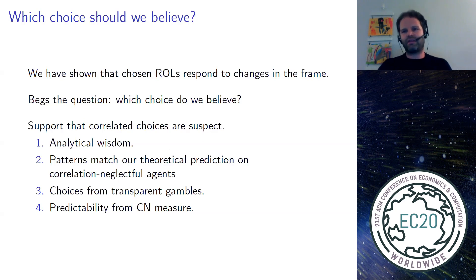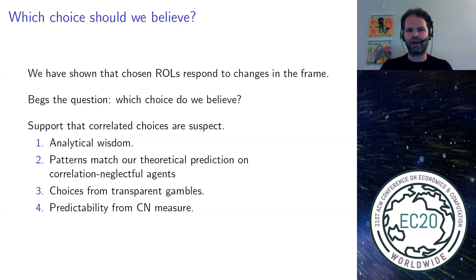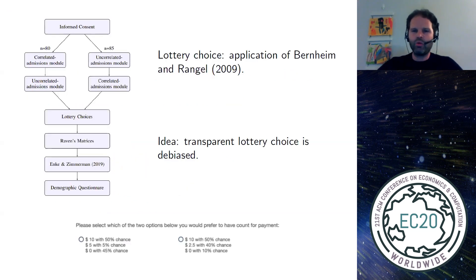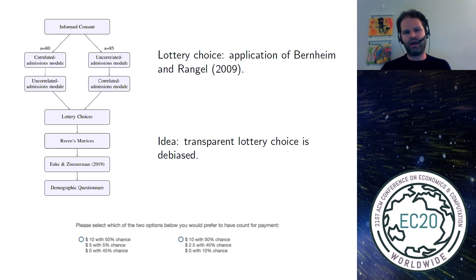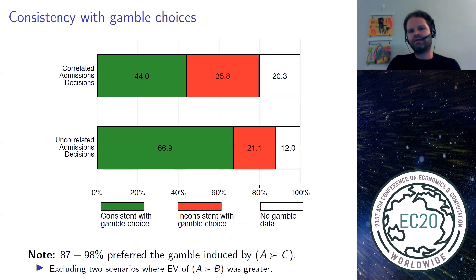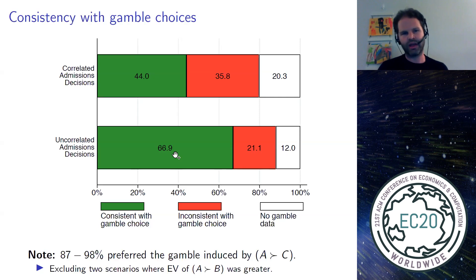You may be convinced that the frame is affecting choices but not yet convinced that the mistake is happening when admission chances are correlated. To address that, we directly asked subjects: do you prefer this distribution or that distribution? What we find is that subjects choose consistently with their reported preferences in this transparent domain much more frequently when admission chances are uncorrelated — 66.9% — and far less frequently choose inconsistently with their reported lottery choice.